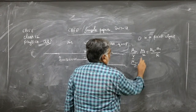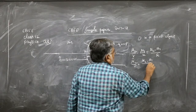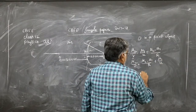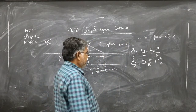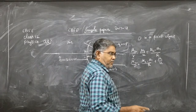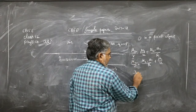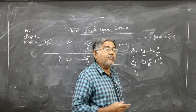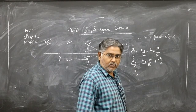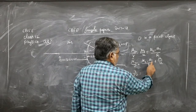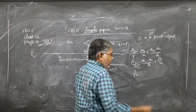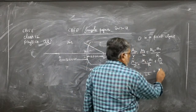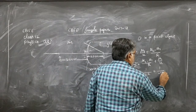Rearranging: μ₂/v = (μ₂ − μ₁)/R + μ₁/u. μ₂ is 1.5, which we write as 3/2 for convenience. Do not assign a sign to v yet since it is the quantity we want to find. μ₂ − μ₁ = 1.5 − 1 = 0.5 = 1/2. μ₁ = 1, and u = −30 cm (sign convention applied).